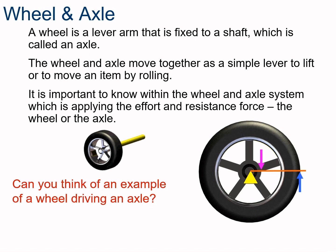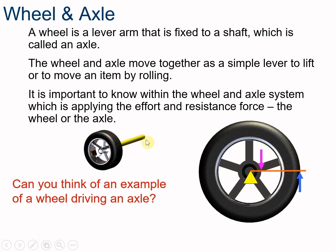Here in front of us we have a wheel and axle. When the wheel turns, why does it turn? Because the axle is turning it — or is it the other way around? Is the axle turning because the wheel has been turned? This is one of the things we're going to have to be paying close attention to: what's the effort force and what's the resistance force?